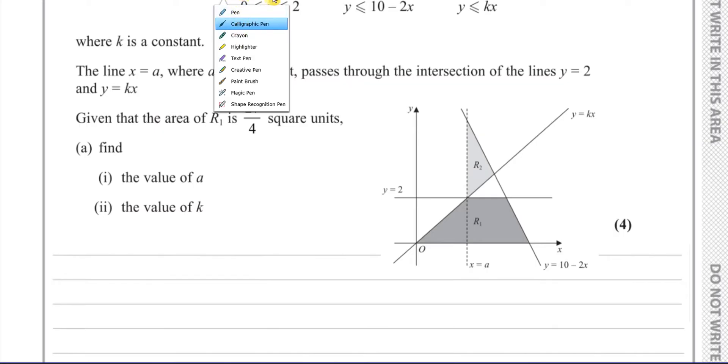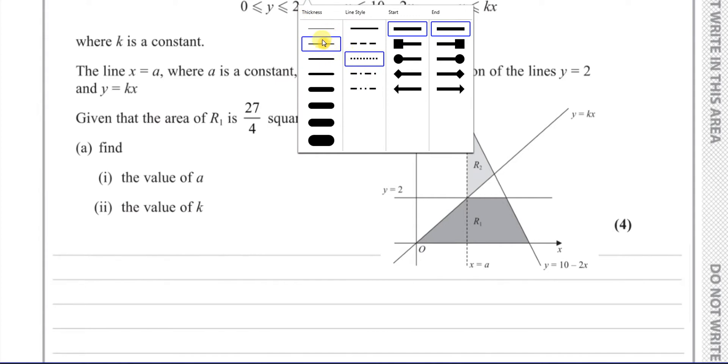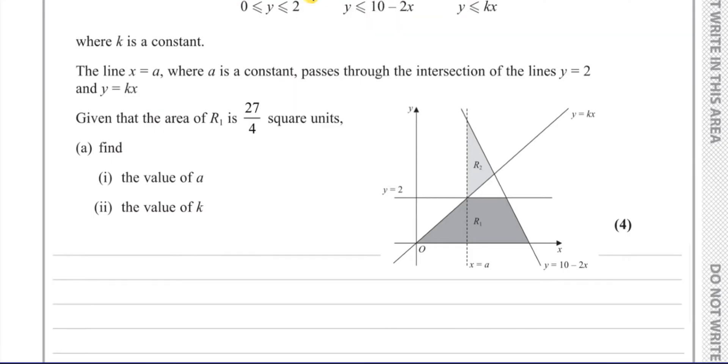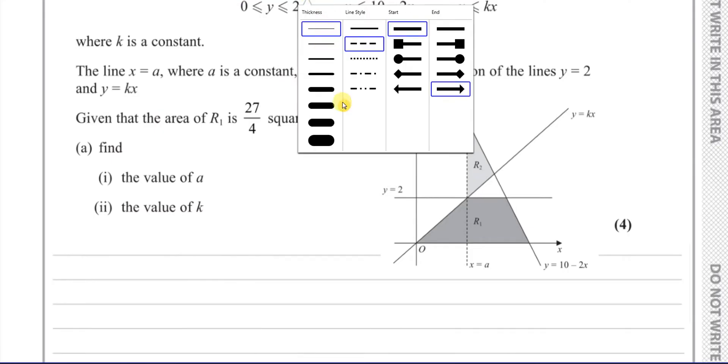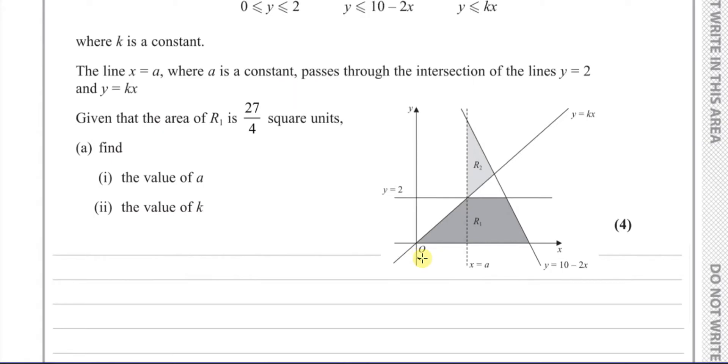So now we've got to find the value of a. A is basically this equation of this line here. So a is how far along we are from the origin to here. That's the distance a, that's what we need to find in part one. So now they've given us that the area of R1 is 27 over 4 square units. So we've got to consider the area of a trapezium.